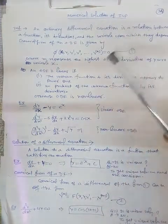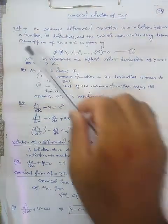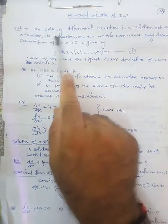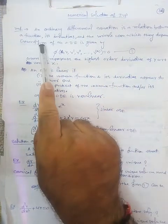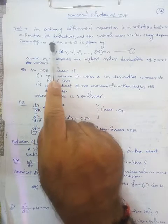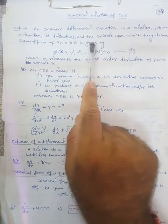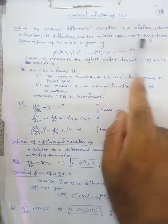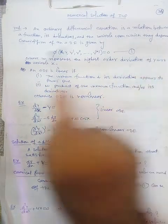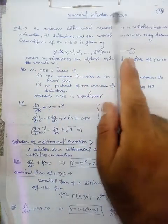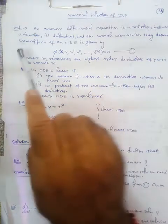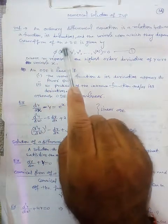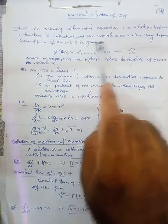This is your last topic. An ordinary differential equation is a relation between a function, its derivatives, and the variable upon which they depend. Generally, a differential equation involves the derivatives, the dependent variable, and the independent variable. The general form of an ordinary differential equation is given by phi of X, Y, Y', up to the M-th order derivative.